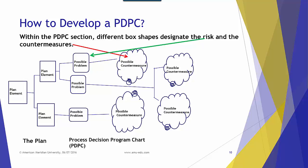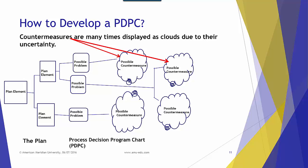Within the PD-PC section, different box shapes designate the risk and the countermeasures. The plan element has a different shape — it is in a square or rectangular shape. Possible problems have a more oval shape, and the possible countermeasures are shaped as clouds. Countermeasures are many times displayed as clouds due to their uncertainty.